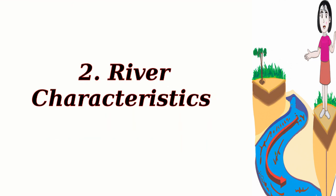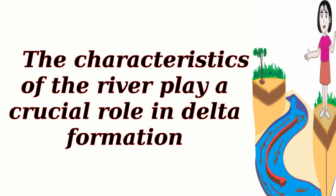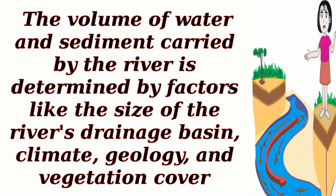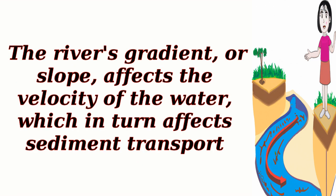2. River characteristics. The characteristics of the river play a crucial role in delta formation. Factors such as the river's volume, sediment load, gradient, and discharge influence how sediment is transported and deposited at the river mouth. The volume of water and sediment carried by the river is determined by factors like the size of the river's drainage basin, climate, geology, and vegetation cover. The river's gradient, or slope, affects the velocity of the water, which in turn affects sediment transport.